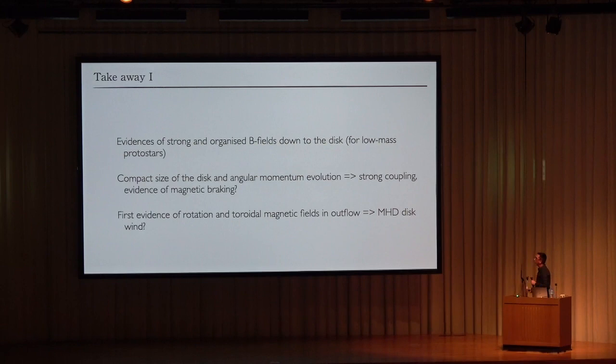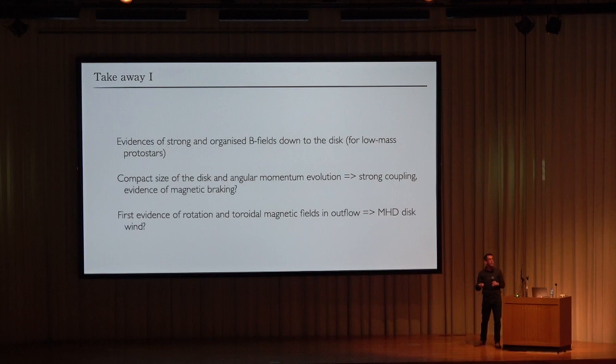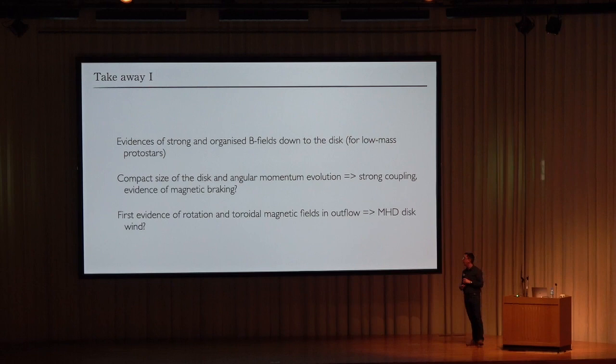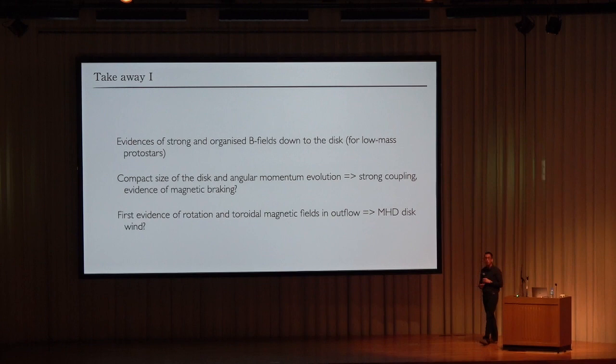The takeaway from the observational part is that we now have evidence of a strong and organized magnetic field down to the disk scale. Disks are compact in size with evidence of angular momentum evolution consistent with magnetic braking. We also have the first evidence of rotation and toroidal magnetic field in outflows, compatible with MHD disk winds.